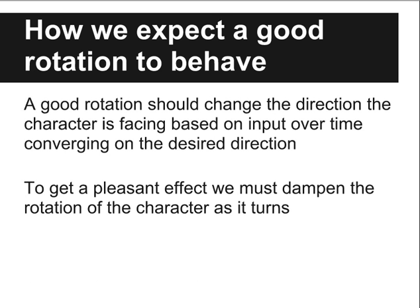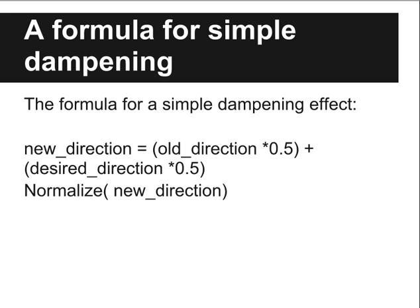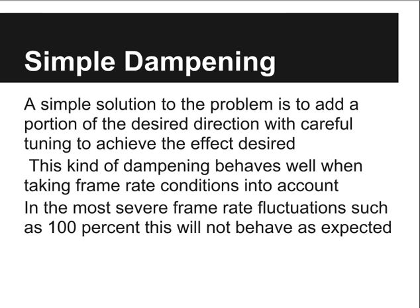The next step is to rotate the character over time based on input, converging on the desired direction. To make this look good, we need to dampen this change in direction. This is a simple formula for providing a dampening effect, representing a portion of the desired direction.